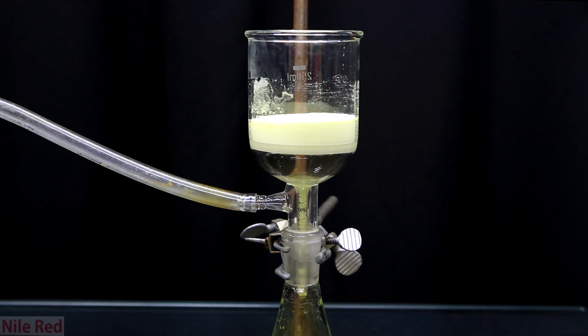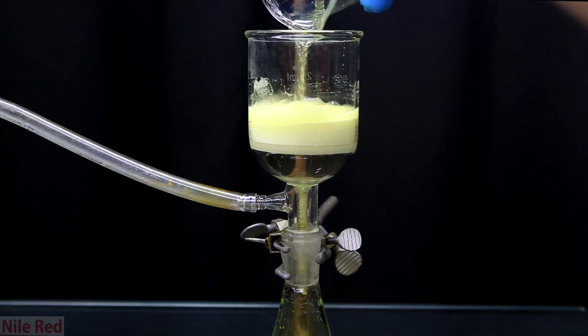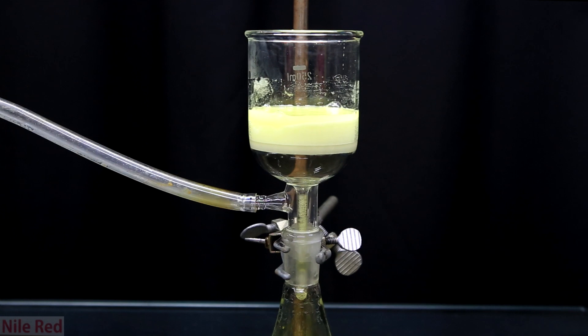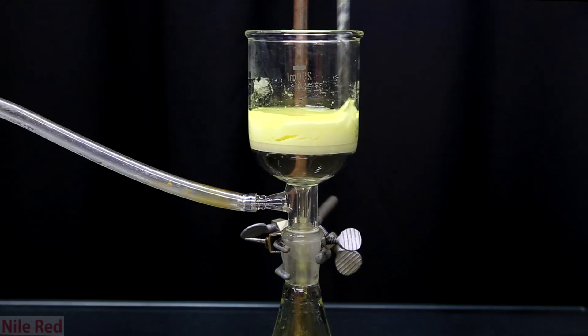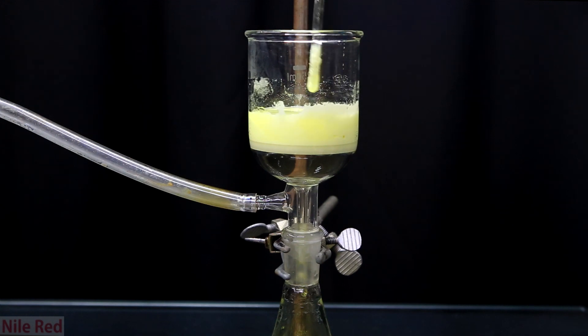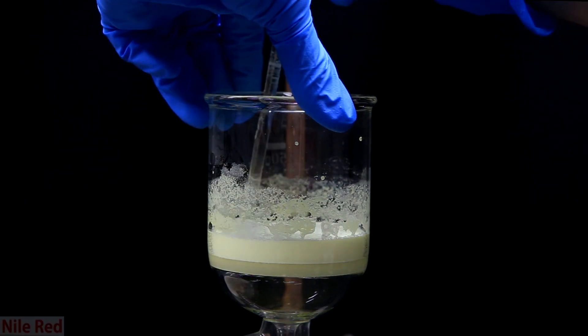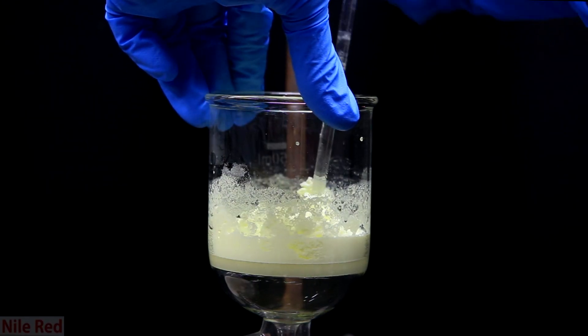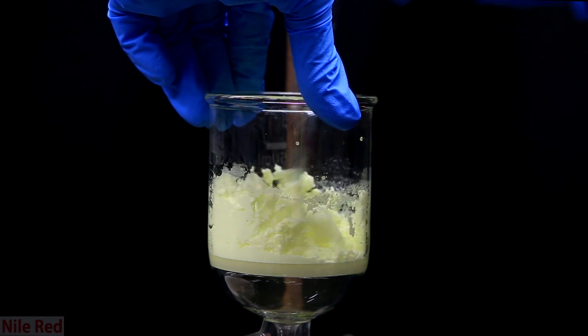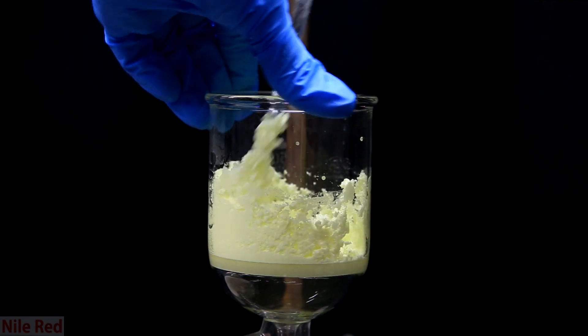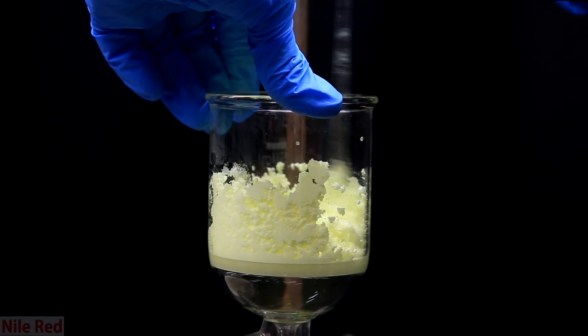The liquid is filtered through and the beaker that we transferred everything in from before is washed with a little bit of water which is also added to the filter. It's washed further a few times with some cold water just to get rid of any acid or 4-nitrophthalic acid that might remain. Afterwards, we keep pulling a vacuum on it to get it as dry as possible. Even after pulling vacuum on it for a bit, it was still pasty but that's okay.